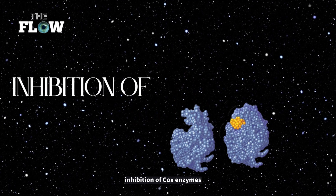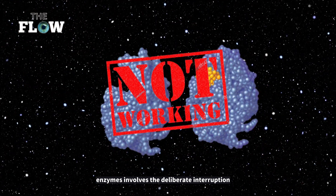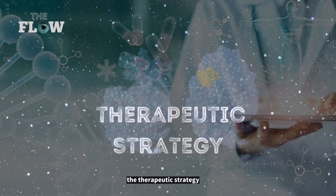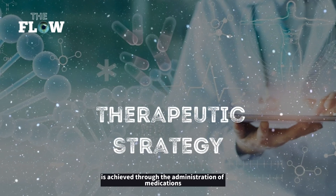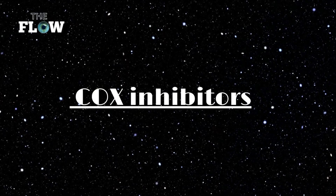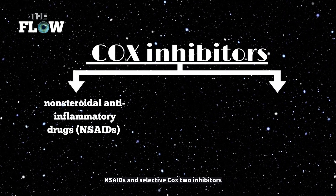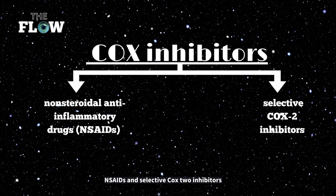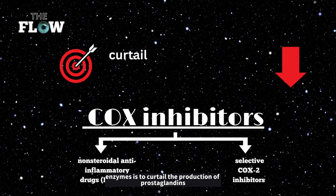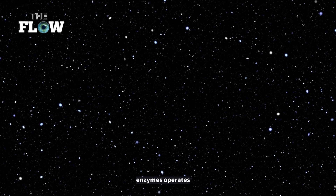Inhibition of COX enzymes involves the deliberate interruption or reduction of the activity of cyclooxygenase enzymes. This therapeutic strategy is achieved through medications referred to as COX inhibitors, which encompass nonsteroidal anti-inflammatory drugs (NSAIDs) and selective COX-2 inhibitors. The primary objective of inhibiting COX enzymes is to curtail the production of prostaglandins.